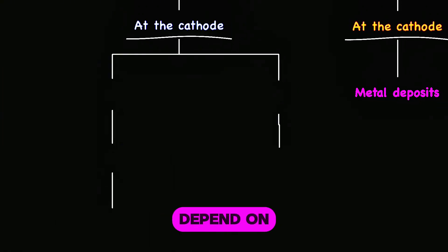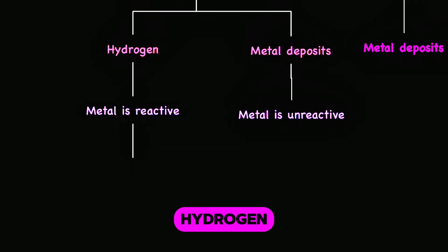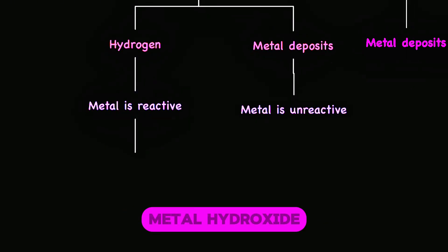If the metal was low in reactivity such as copper or silver, you get a metal deposit on the cathode. For reactive metals such as sodium or potassium, you get hydrogen and the electrolyte becomes metal hydroxide.